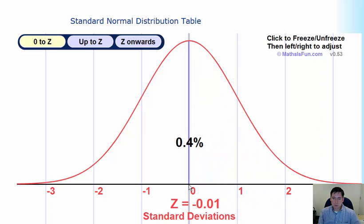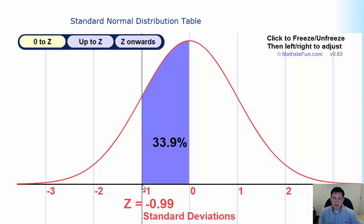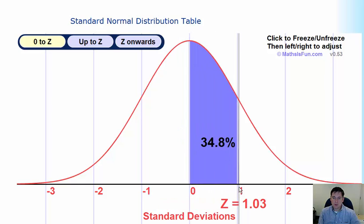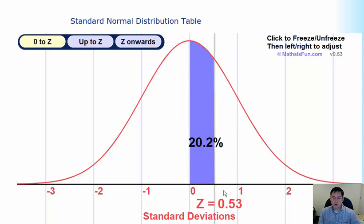And the same is true for the other side. It's a symmetric curve, so we have about 34% between 0 and minus 1, and about 34% between 0 and plus 1.